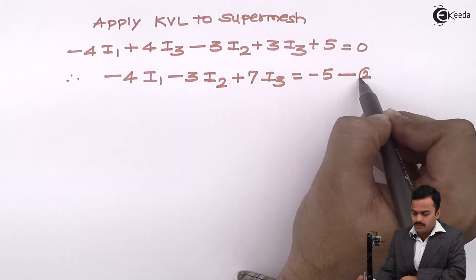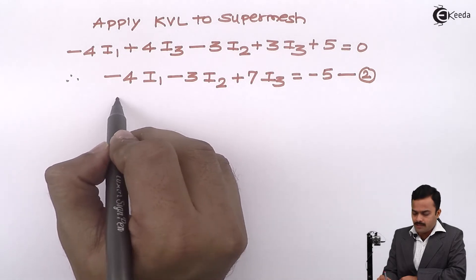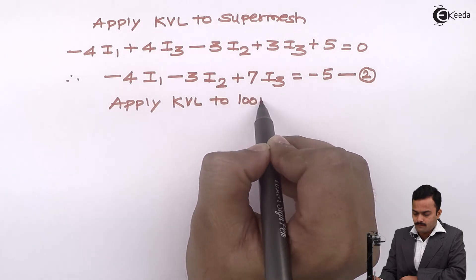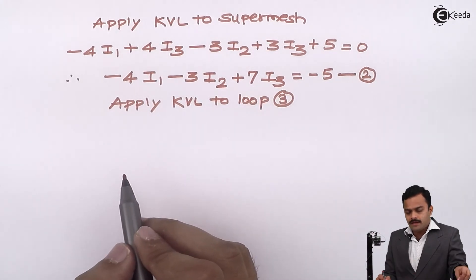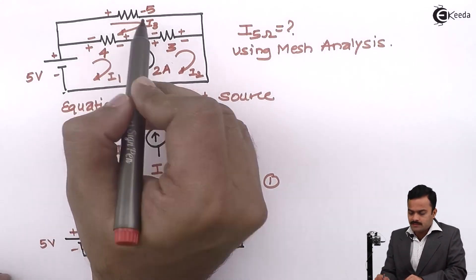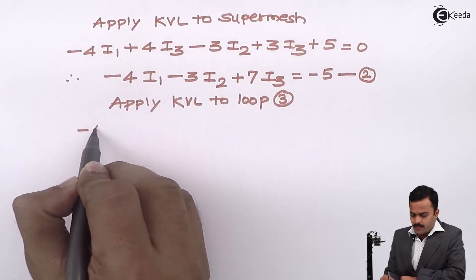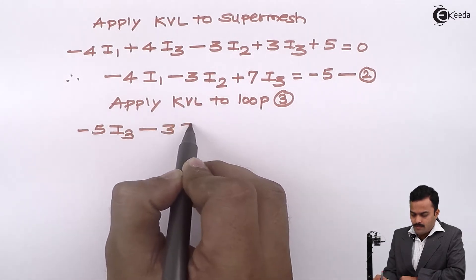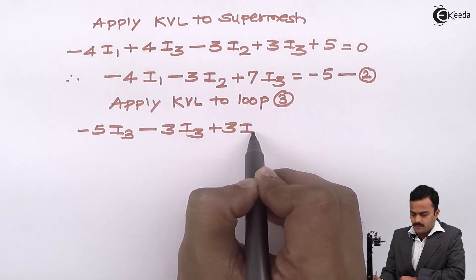And the third equation I will obtain by applying KVL to loop number 3. So if I apply KVL to loop number 3, I will get these three elements and the drop across them will be minus 5 I3 minus 3 I3 plus 3 I2 minus 4 I3 plus 4 I1 equal to 0.